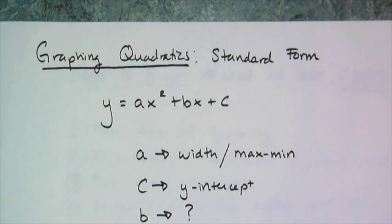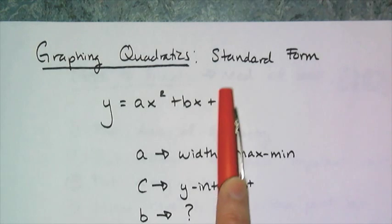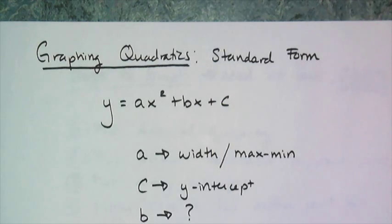That c value is really just the y-intercept, because when you plug in a 0 for the x's you're just left with c. And this b value we kind of left up in the air as to what it did, but we had an indication that it would have something to do with the shift left or right.